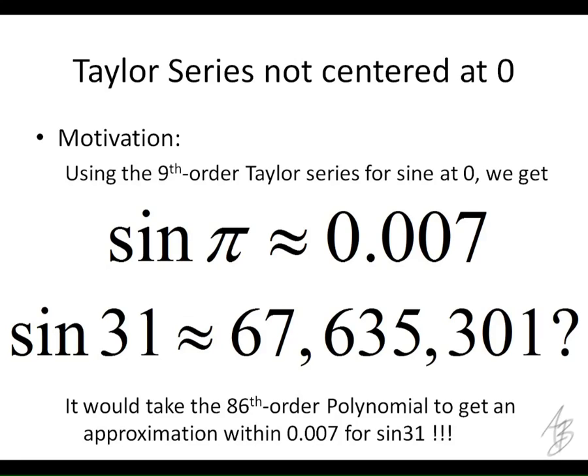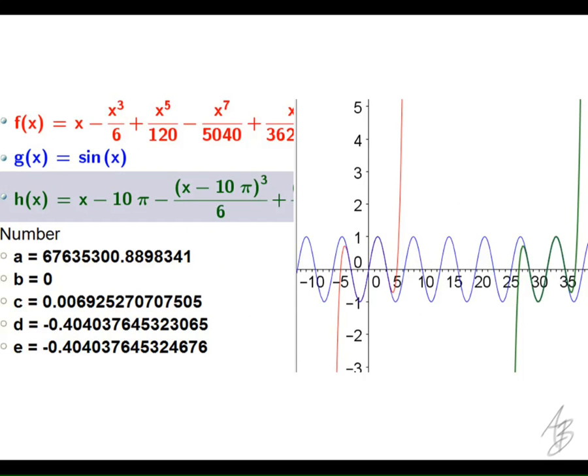So what would be a better choice? Something that we do know the value of sine and its derivatives that's close to 31? 10 pi. Because 10 pi is going to be about 31.4159 and so on. It's going to be really close to 31. So if we write the power series centered at 10 pi, then what we get is a picture that looks like this.